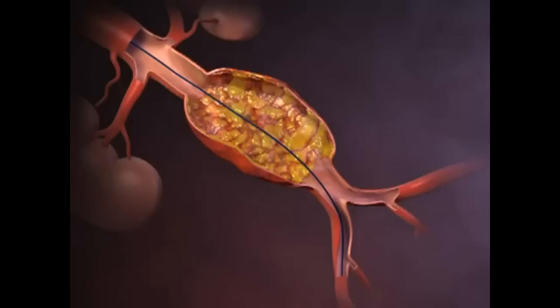This is followed by the sheathed main body of the stent graft, which is positioned with the use of fluoroscopy.